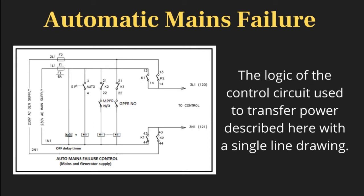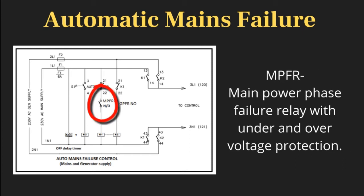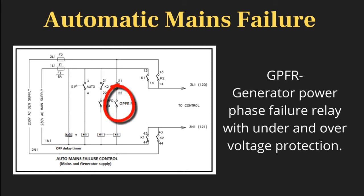The AMF control system is used to transfer power, as described here with a single line drawing. Key components include: MPFR — main power phase failure relay with under and over voltage protection; and GPFR — generator power phase failure relay with under and over voltage protection.